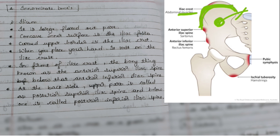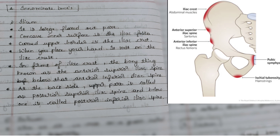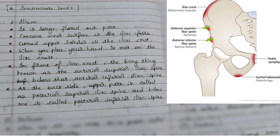When you place your hand on the hip, it rests on the iliac crest. From the front view you can see two pointy bones: the anterior superior iliac spine and the anterior inferior iliac spine. From the back side of the pelvic bone they are called the posterior superior iliac spine and the posterior inferior iliac spine.